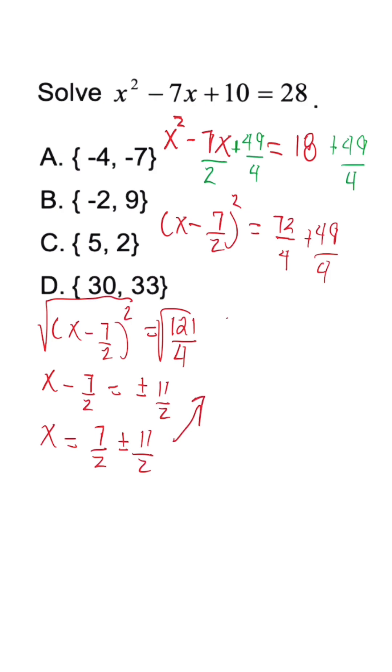So x is equal to 7 plus 11, which is 18. 18 divided by 2 is 9, so that's our first x. The second x: 7 minus 11 is negative 4. Negative 4 divided by 2 means x is equal to negative 2. So my answer is going to be B. However, if you use another method...